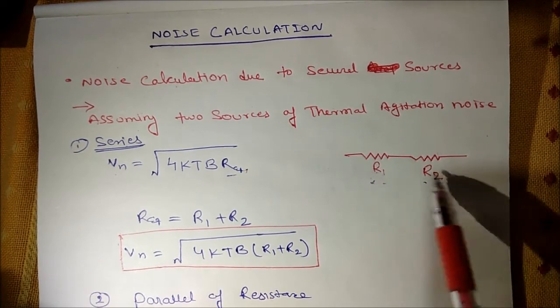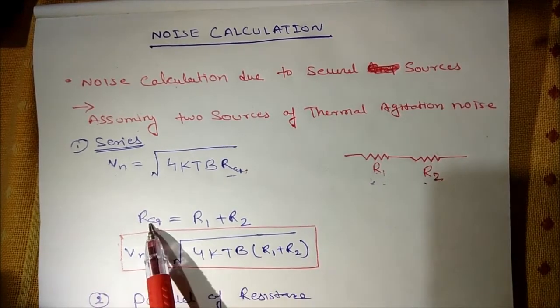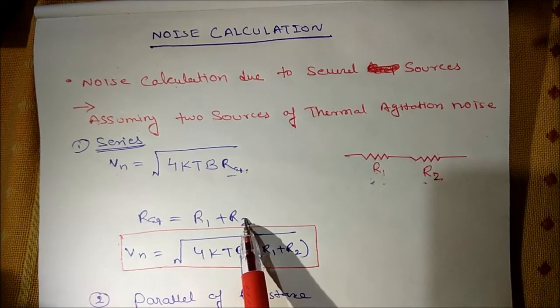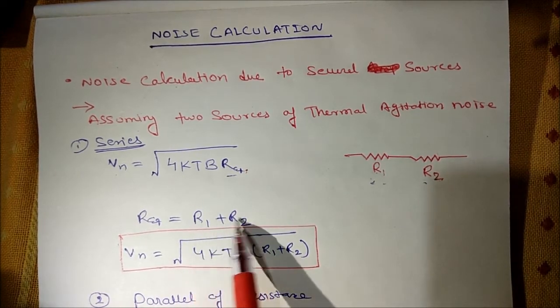Here R1 and R2 are connected in series. So the R equivalent is given as R1 plus R2. This is series equivalent resistance.